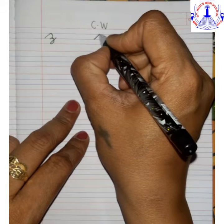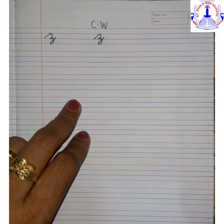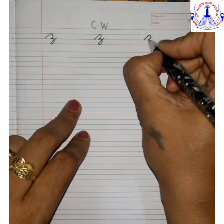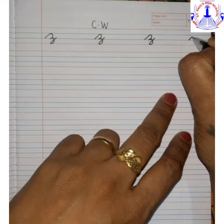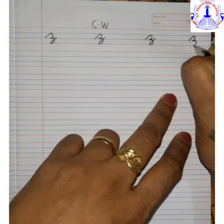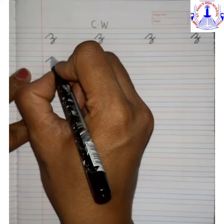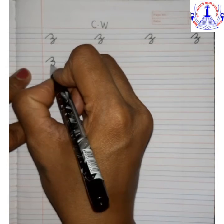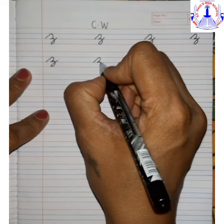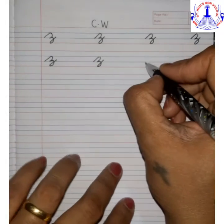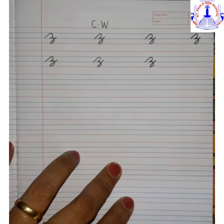Make a slanting line, then make a curve, go down till the red line, and then make a loop. Slanting line, one more curve — from the red line you have to make a loop. Slanting line, make a curve, one more curve, and then make a loop. Cursive letter Z: make a slanting line, curve, one more curve, and then make a loop.